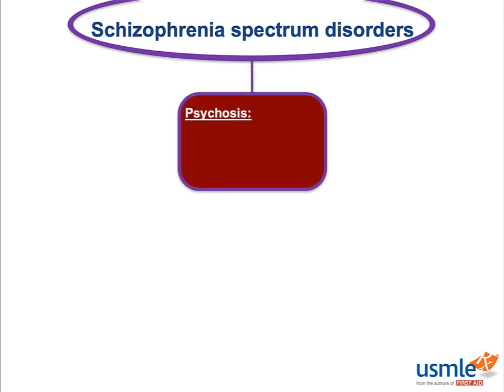Psychosis is defined as having either hallucinations, delusions — which are fixed, false beliefs — and disorganization. Basically, words or actions that suggest a patient can't process things in a logical, linear manner like you or me.